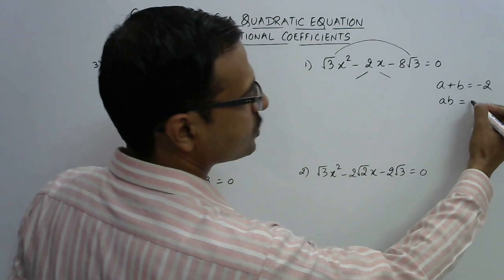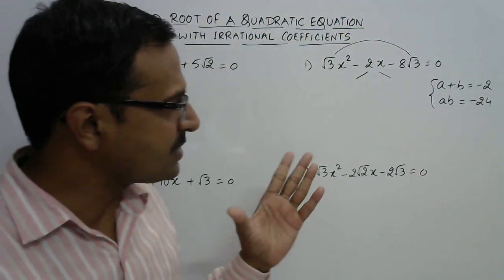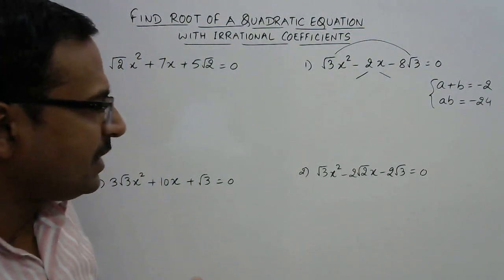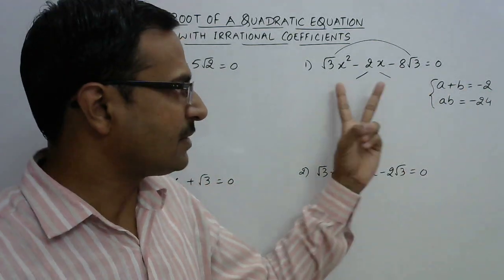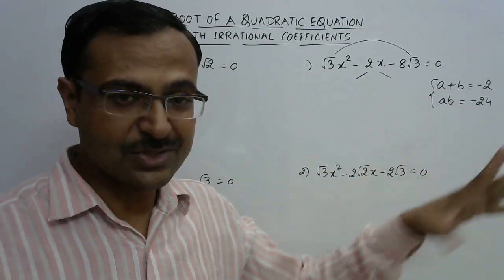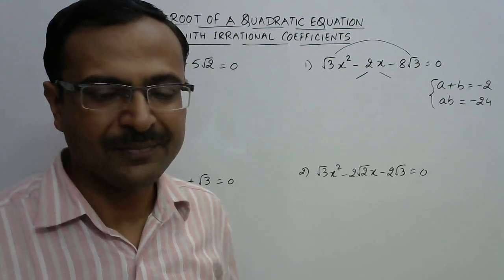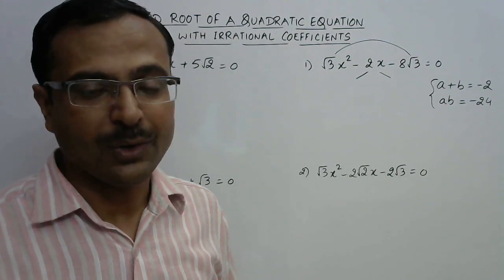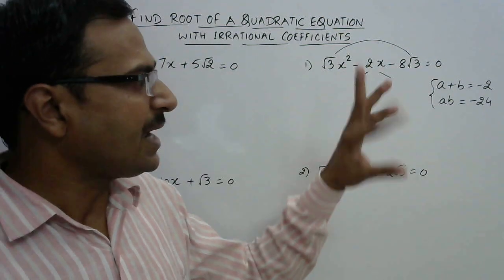We need two numbers whose sum is minus 2 and whose product is minus 24. The sum is minus 2, so the difference between the two factors should be 2. Checking: 4 and 2 — product is not 24; 5 and 3 — product is not 24; 6 and 4 — the product of 6 and 4 is 24, and the difference between 6 and 4 is 2. After identifying 6 and 4, we need to think about the sign.